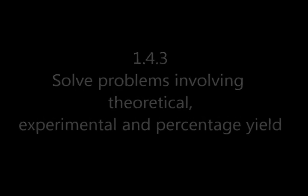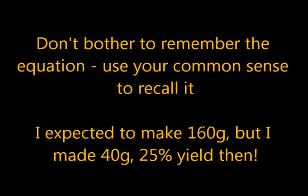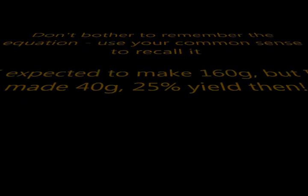My number one piece of advice here is don't try and memorize the equation. You'll get it upside down or confused. Use your common sense. So if you expected to make 160 grams, but you only made 40 grams, that's 25% yield, isn't it? Think of it like that.